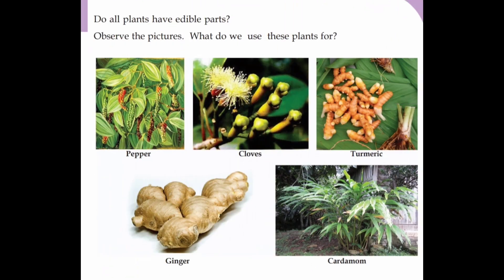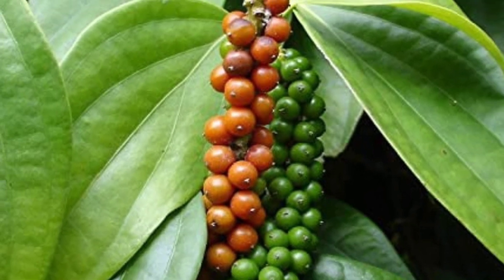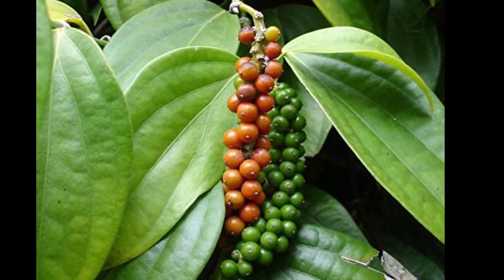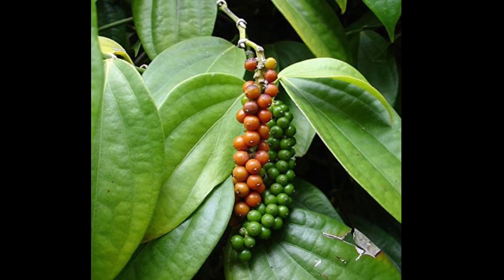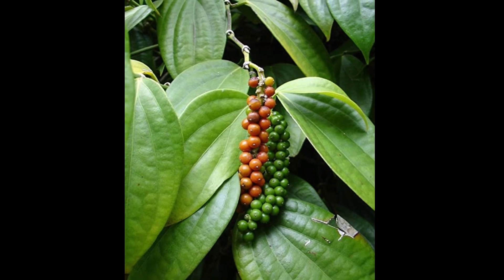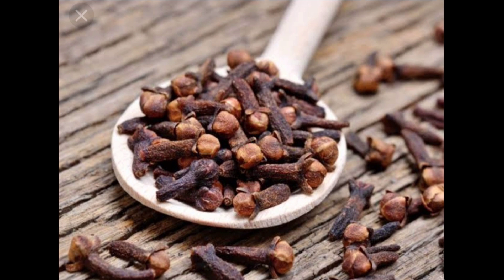Observe the pictures. What do we use these plants for? Pepper, cloves, turmeric, ginger, cardamom. In the case of pepper, we use the fruit as the edible part. We use the fruit for the edible part.